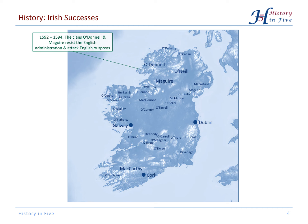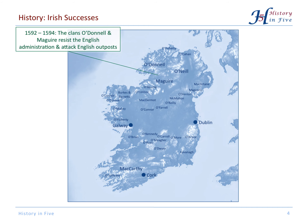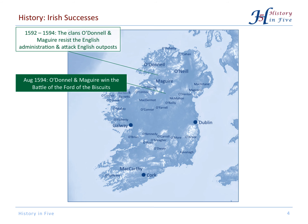In the northwest, the clans O'Donnell and Maguire resisted the English administration and attacked the English outposts. At some point they were able to win a battle — the Battle of the Fort of the Biscuits mentioned earlier.